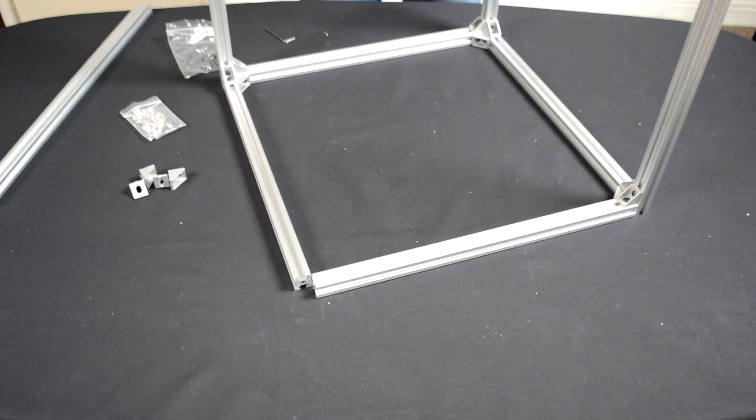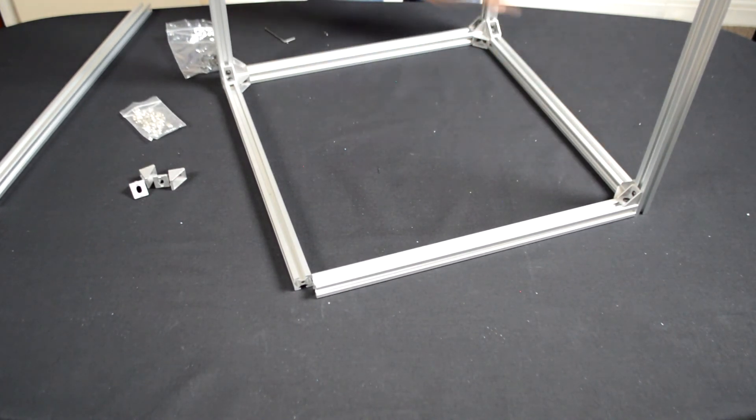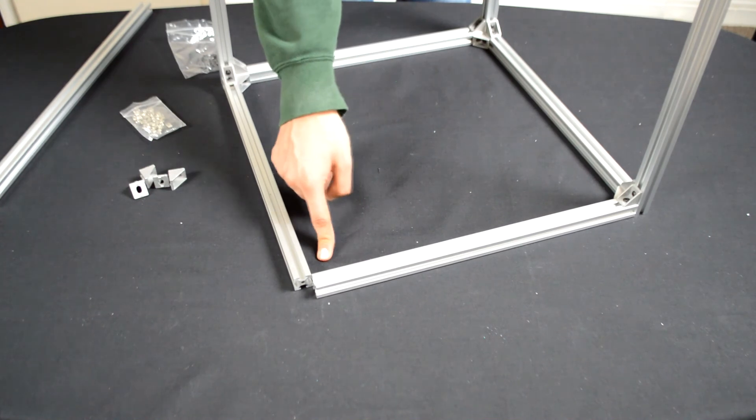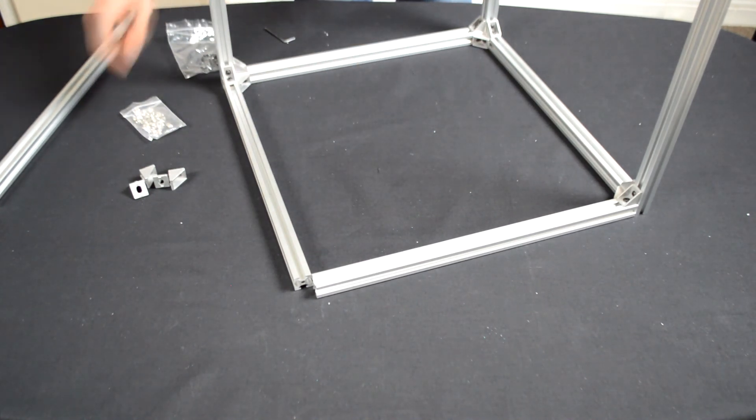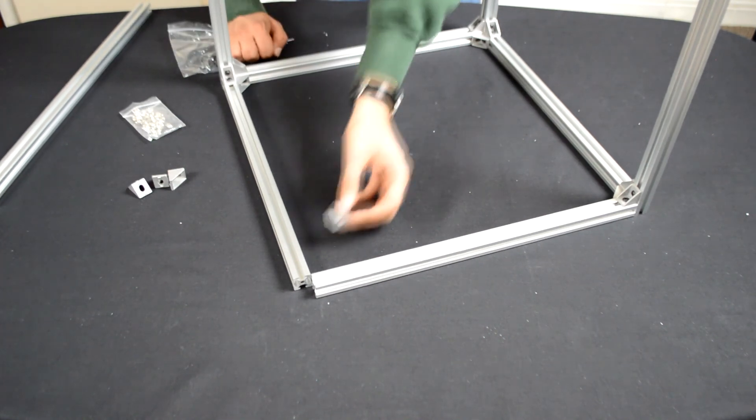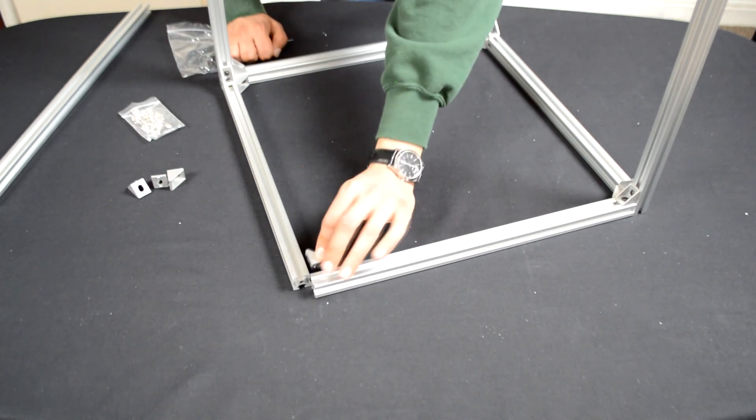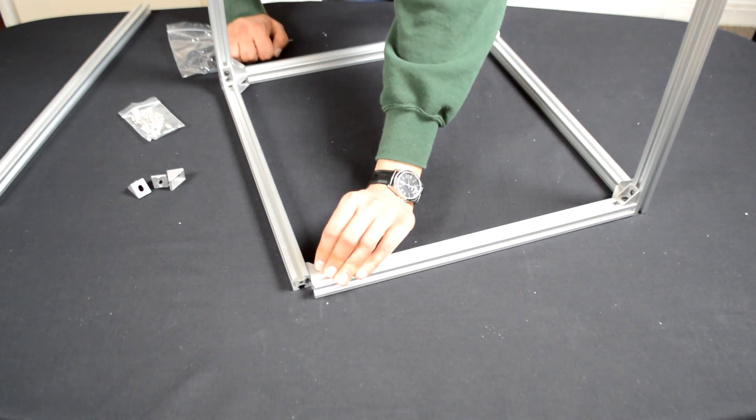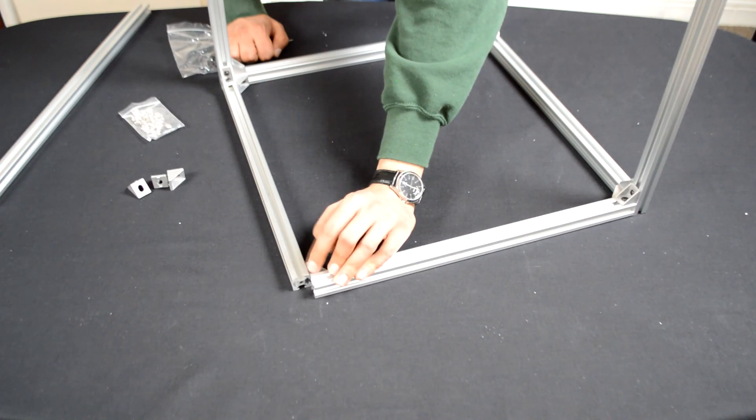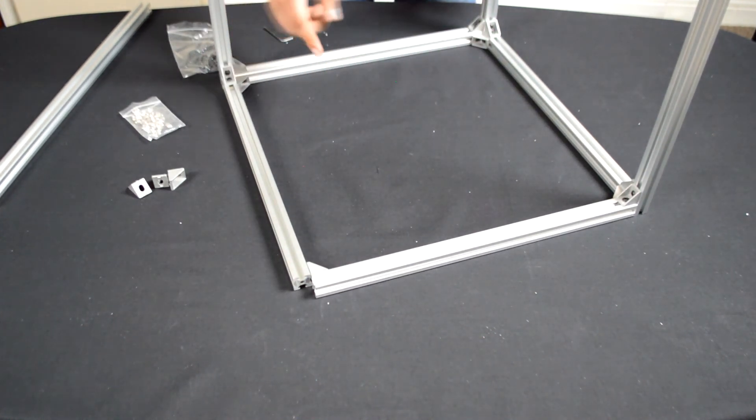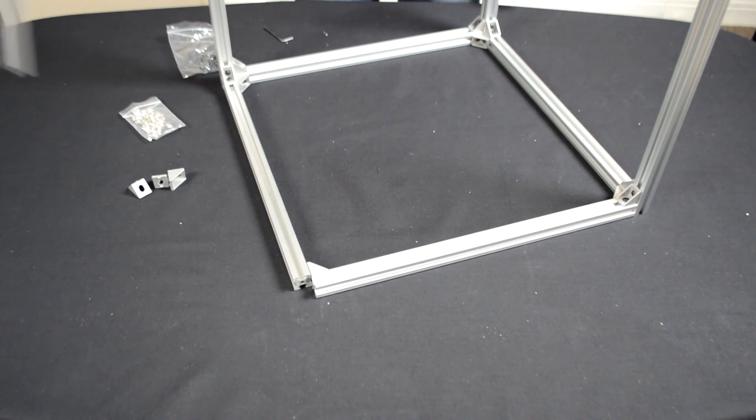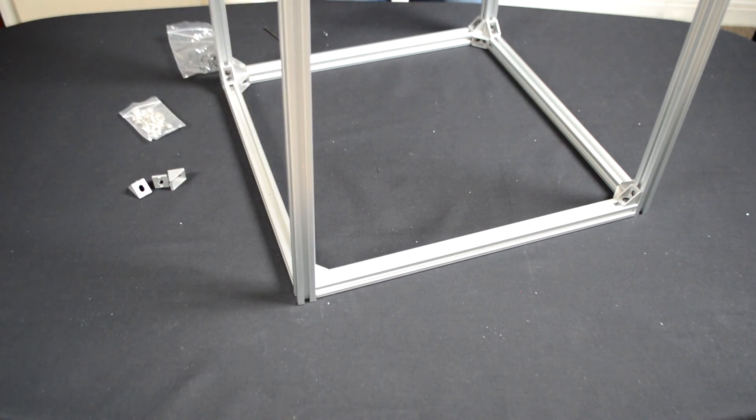Okay so once you've got three of the corners done and you're on the last corner, what you want to do is take one of the aluminum corner brackets and secure that one in first and then put the remaining 500 millimeter extrusion in.